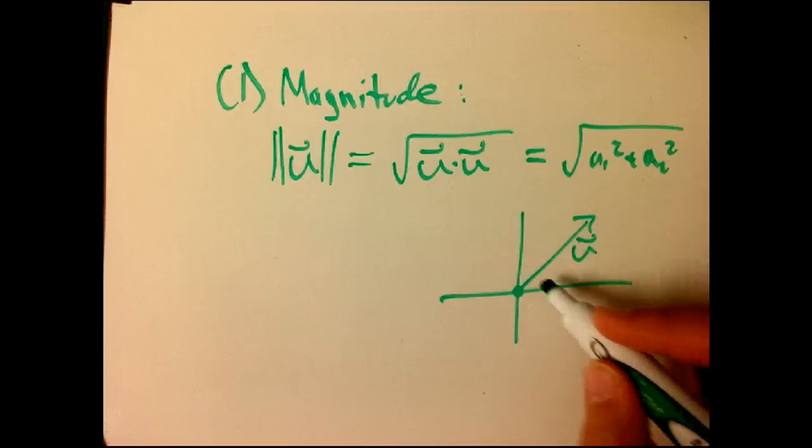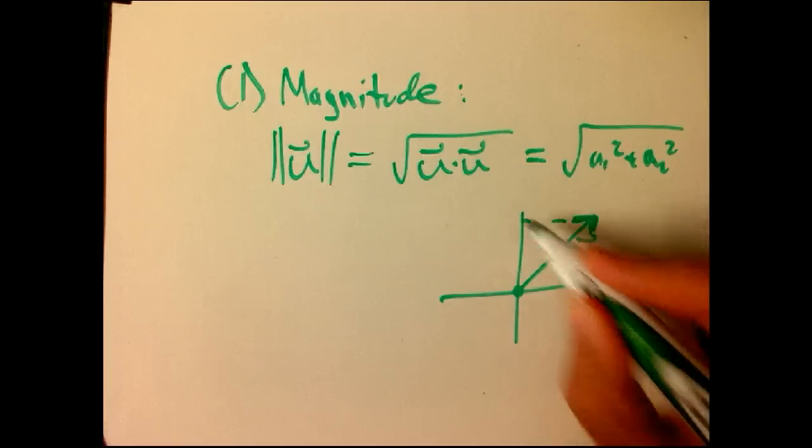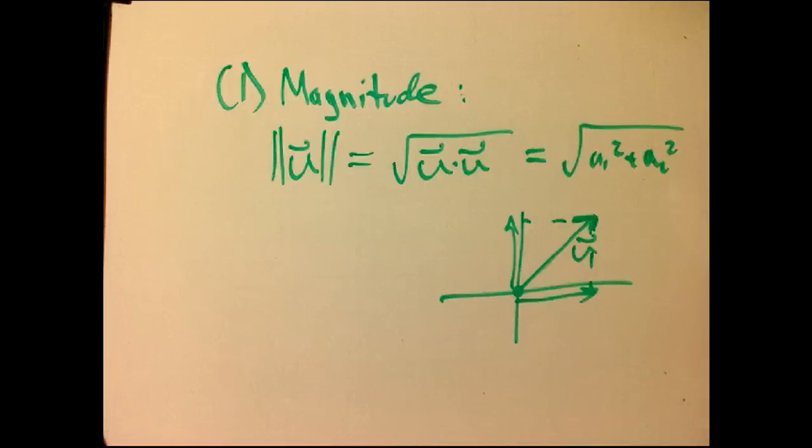So here's a vector u, and to get the length of that vector, I really should just figure out what this component is, what this component is, and use Pythagoras. And that's what this is. It's just Pythagoras. That's a u, not an a, by the way.